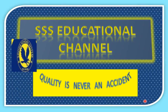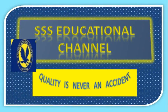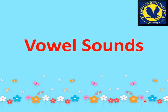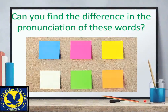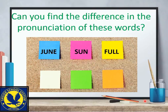Bismillahirrahmanirrahim, Assalamu Alaikum students, welcome to SSS Educational Channel. Today we are going to study a little bit about vowel sounds. Mainly we are going to discuss three vowel sounds. Can you find the difference in the pronunciation of these three words? The first word is 'june', the second one is 'sun', and the third word is 'full'.